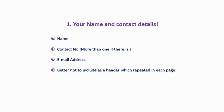Number one: your name and contact details. You have to write your name and your contact number — more than one if available. For example, you might have a mobile number plus a home landline number. As a job seeker, you never want to miss a call from your future employer, so give both numbers. It's also really important to furnish your email address, because most communications these days are done through email. Make sure that you give your email address in your resume.